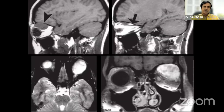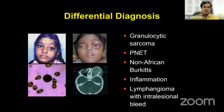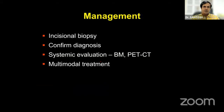On MRI, rhabdomyosarcoma's intensity is slightly darker than brain tissue — almost similar to brain tissue. These are the differential diagnoses: granulocytic sarcoma, where a child may have subacute proptosis — this child had subconjunctival hemorrhage and also had Roth spots in the fundus. This is a child with non-African Burkitt's lymphoma with intracranial extension. Severe inflammation and lymphangioma with intralesional bleed can also mimic rhabdomyosarcoma.